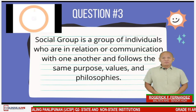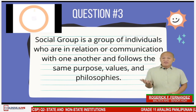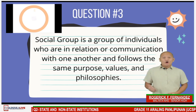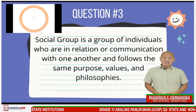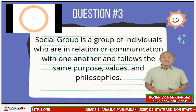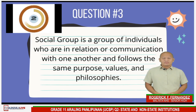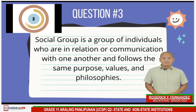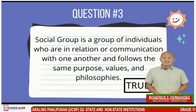Question number two: Observance of common goals and objectives is not an element of social organization. The answer is FALSE. Question number three: Social group is a group of individuals who are in relation or communication with one another and follows the same purpose, values, and philosophies. The answer is TRUE.